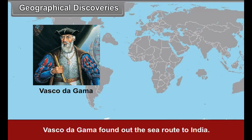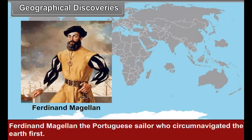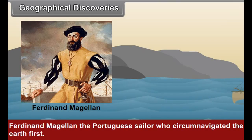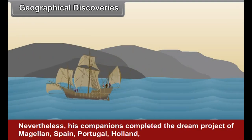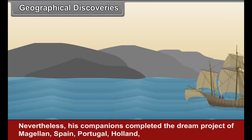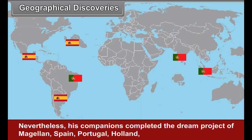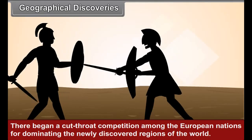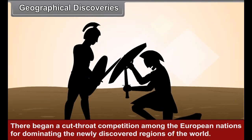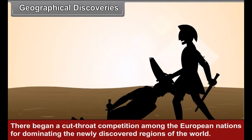Vasco de Gama found out the sea route to India. Ferdinand Magellan, the Portuguese sailor who circumnavigated the earth first, was killed during his voyage; nevertheless, his companions completed the dream project of Magellan. Spain, Portugal, Holland, England, and France set up colonies in the newly discovered regions through adventurous sailing. There began a cut-throat competition among the European nations for dominating the newly discovered regions of the world, with England in a leading position.